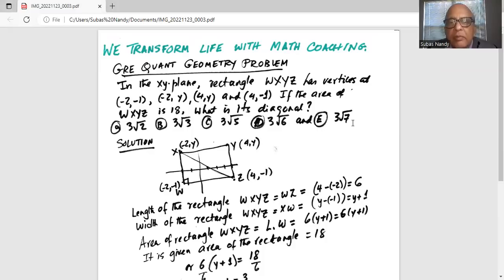In the xy-plane, the rectangle WXYZ has vertices at (-2, -1), (-2, y), (4, y), and (4, -1).